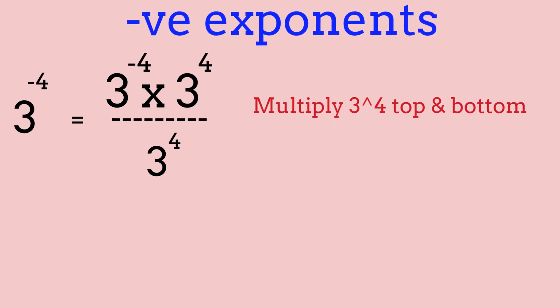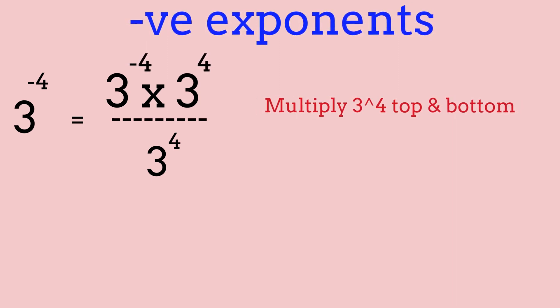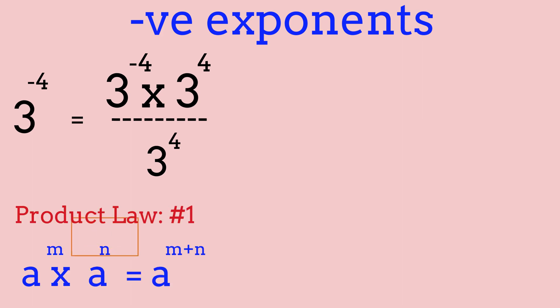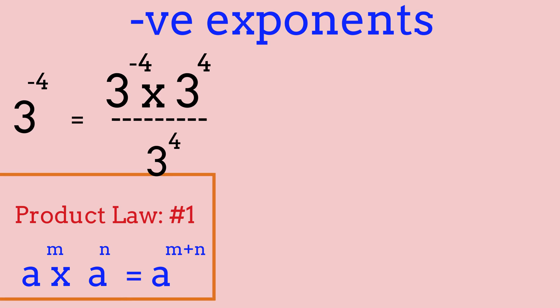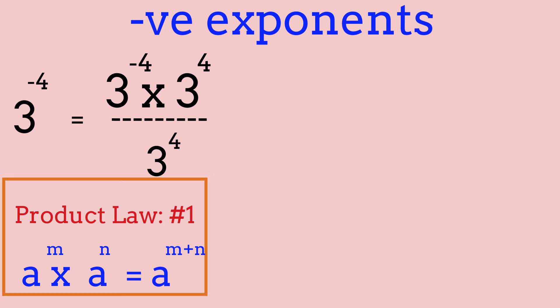Since we already know this, we can just divide by 1 underneath. So our equation will look like: 3 to the power of negative 4, times 3 to the power of 4, divided by 3 to the power of 4. Here we're going to be using our first law, called the product law — multiplying powers with the same base. If the base is the same, all you have to do is add the exponents. So since 3 to the power of negative 4 times 3 to the power of 4 share the same base, we keep the base and add the exponents, giving us 3 to the power of negative 4 plus 4, divided by 3 to the power of 4.